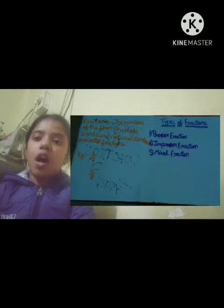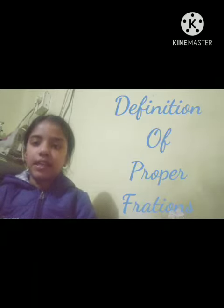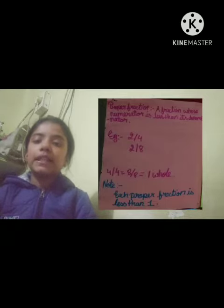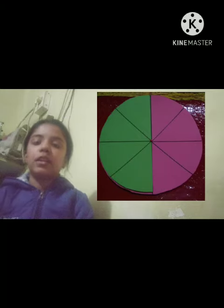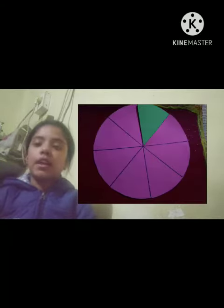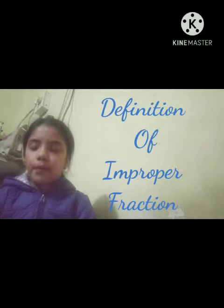Types of fractions are proper fraction, improper fraction, and mixed fraction. The definition of proper fraction is: a fraction whose numerator is less than the denominator. This picture is an example of a proper fraction — it is 4 by 8, and 4 is less than 8. This picture is also an example of a proper fraction — it is 7 by 8, and 7 is less than 8.